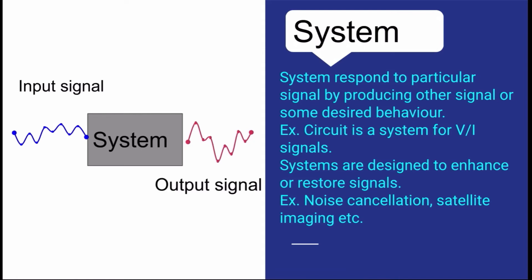Systems are designed to enhance and restore your signals. Sometimes you can see that there are repeaters in communication link. Repeaters means that someone is traveling very far, so with distance and time it fades, its value is reduced. So to boost it you will keep repeaters. Example is to enhance or restore signals. There are examples like noise cancellation, satellite imaging. Those images are not very clear, they are very blurred. In that image you do the processing with that image and then you extract a clear picture.